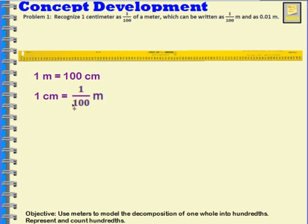So this is how we would write that as a fraction. If we wanted to write it as a decimal, we would write it this way. One one-hundredth of a meter. It would be written zero decimal zero one.